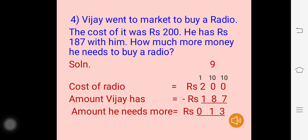First statement: cost of the radio equals rupees 200. The amount Vijay has is equal to rupees 187. As you can see, 200 is a three-digit number which is the minuend and zeros are in the minuend. 187 is the amount owned by Vijay, which is a three-digit number and the subtrahend written below.